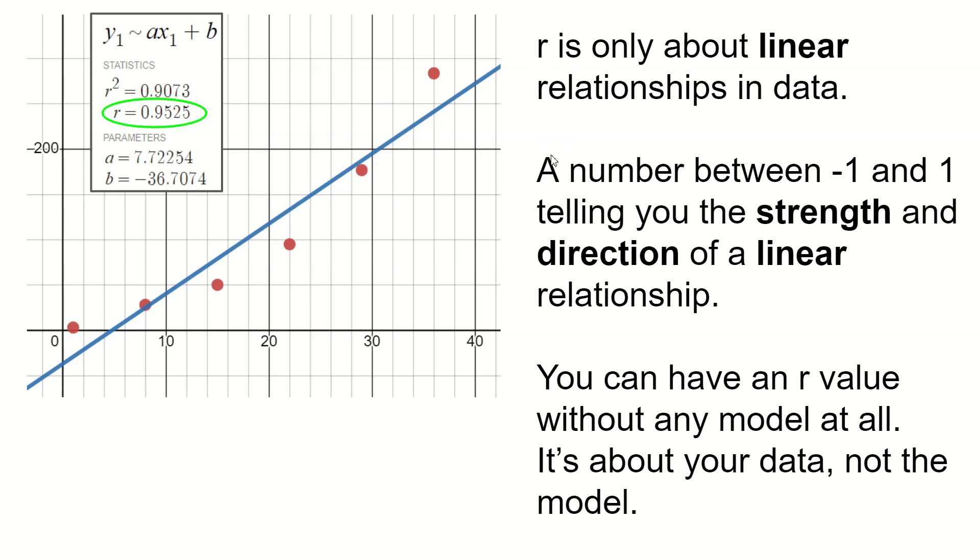So R is a number whose values can only be between negative one and positive one. And the number tells you two things. It tells you the strength and the direction of a linear relationship. And actually you can have an R value without any model at all. The model is your equation that predicts what the Y value should be as a function of the X value. But even before you have a best fit line, you can calculate R just based on your data itself.